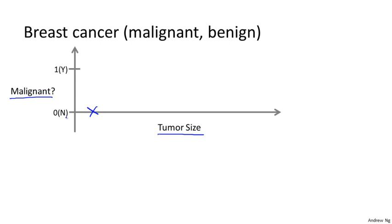So let's say your dataset looks like this, where we saw a tumor of this size that turned out to be benign, one of this size, one of this size, and so on. And sadly, we also saw a few malignant tumors, so one of that size, one of that size, one of that size, and so on. So in this example, I have five examples of benign tumors shown down here, and five examples of malignant tumors shown with a vertical axis value of 1.